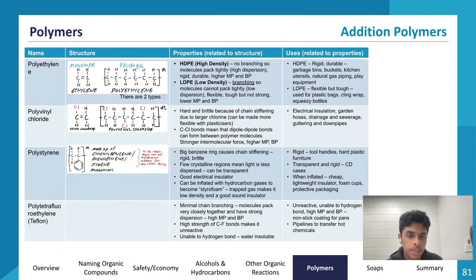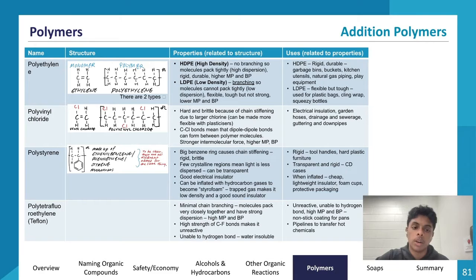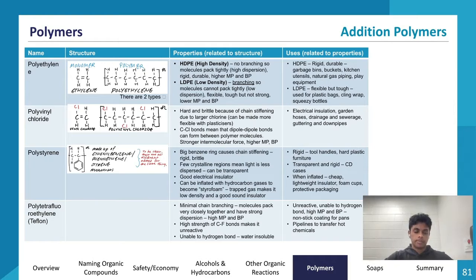Polystyrene has a large benzene ring which causes chain stiffening, making it rigid and brittle. It has few crystalline regions, which can make it transparent sometimes, and it's a good electrical insulator. It can be inflated with hydrocarbon gases to become styrofoam — the trapped gases make it low density and a good sound insulator. Uses include tool handles, hard plastic furniture, CD cases, and when inflated, foam cups, lightweight insulation, and protective packaging.